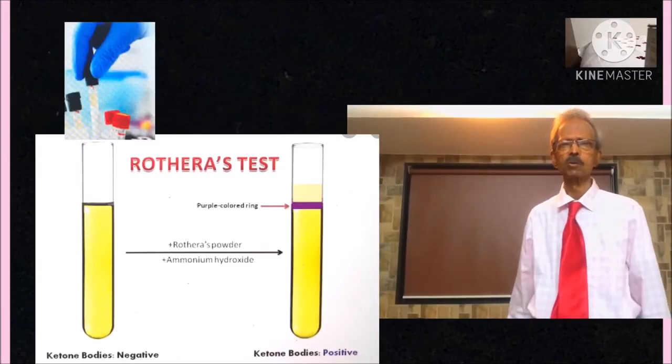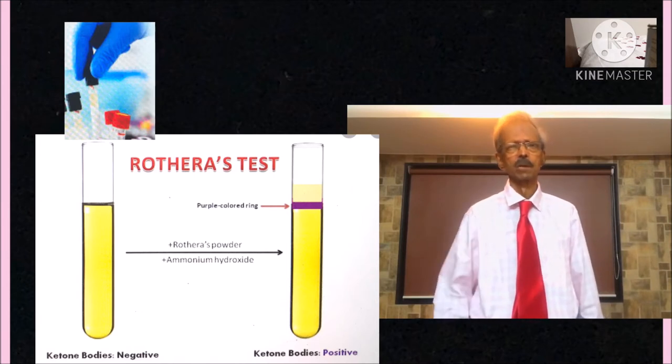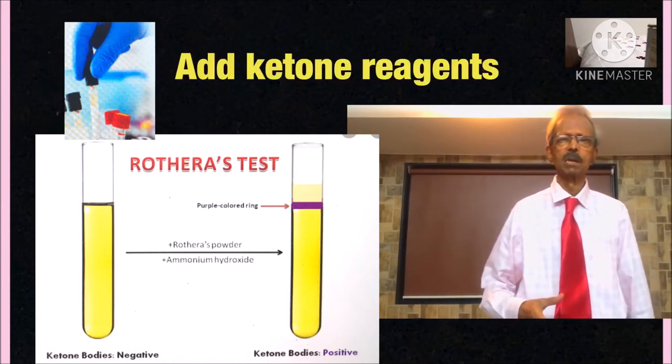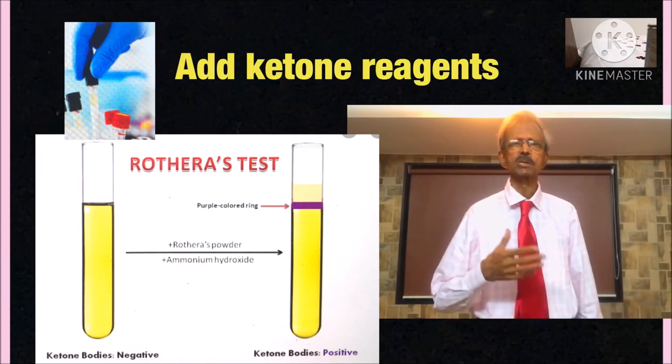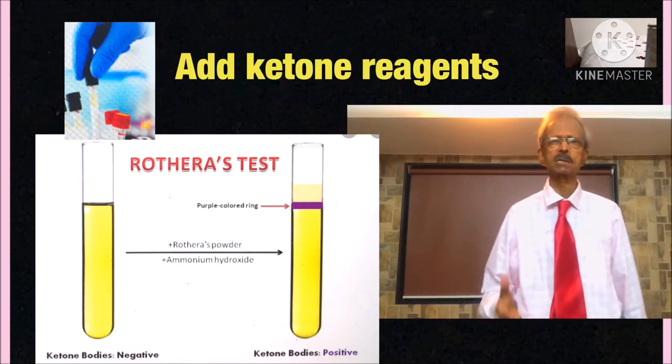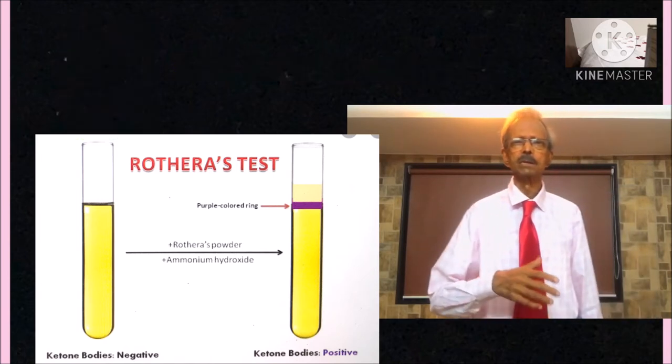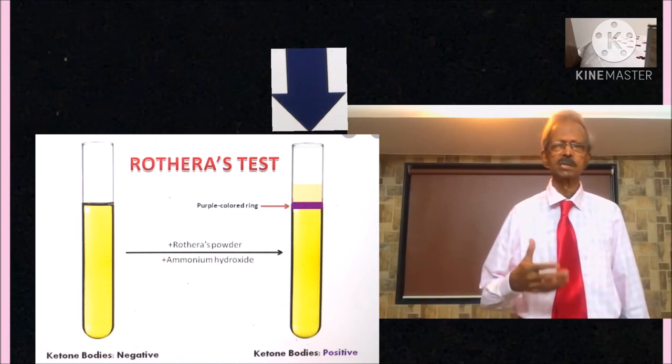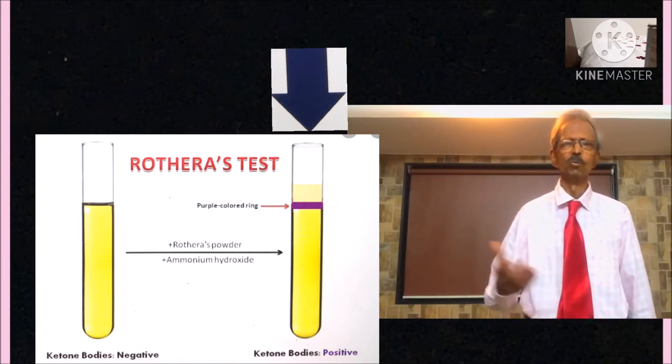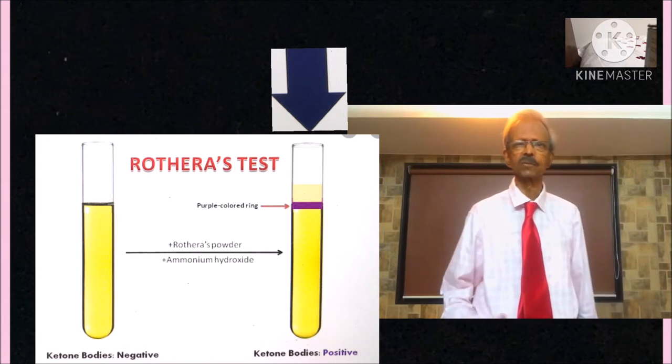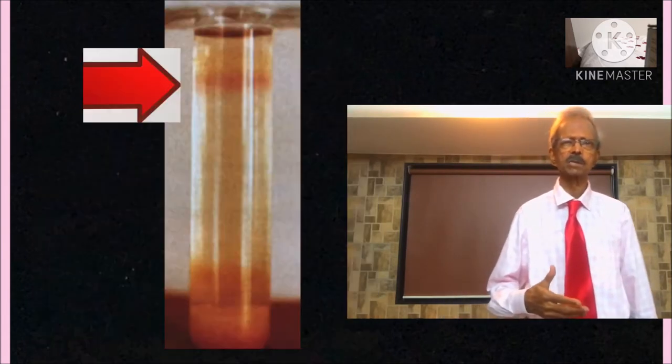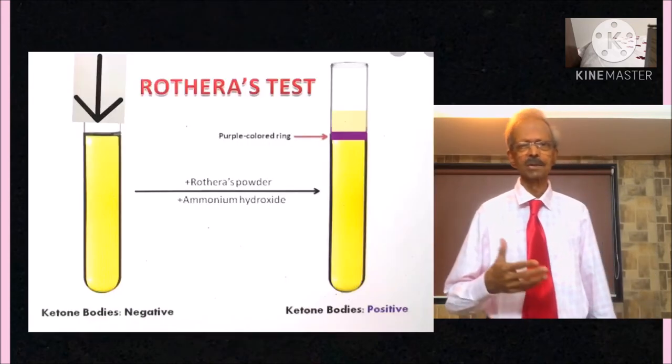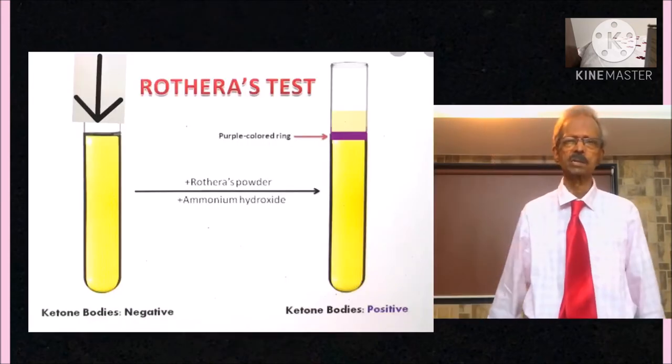For urine ketone body test, transfer urine in a test tube and add ketone body test mixture. Mix and then gently add ammonium hydroxide reagent from the test tube sides. If ketone bodies are present, then acetone from it reacts with sodium nitroprusside from the test mixture. And presence of purple ring at the top indicates test is positive for ketone bodies. No appearance of purple ring means ketone body test is negative.